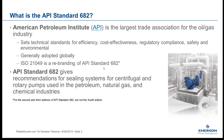However, ISO 21049 applies to the prior second and third editions. The fourth edition is not yet represented by ISO 21049 — it still represents the third edition. So for the fourth edition, you would need to acquire it from API, not ISO. Standard 682 is primarily to give recommendations on the sealing systems around the shaft for centrifugal and rotary pumps used in the petroleum, natural gas, and chemical industries.